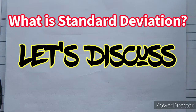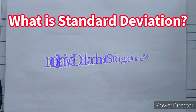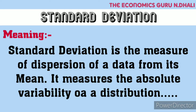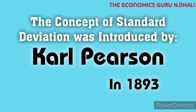Now we discuss about the standard deviation. What is standard deviation? First of all, we have to know the meaning of standard deviation. Standard deviation is the measure of dispersion of a set of data from its mean. It measures the absolute variability of a distribution. The higher the dispersion or variability, the greater is the standard deviation and greater will be the magnitude of the deviation of the values from their mean. The concept of standard deviation was introduced by calculation in 1893.